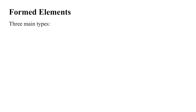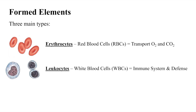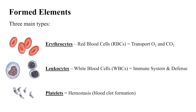There are three main types of formed elements present in blood. Most numerous are the erythrocytes, or red blood cells, which contain hemoglobin molecules that transport oxygen and carbon dioxide. Leukocytes, or white blood cells, are a part of the body's immune system and play a role in defending our body from infectious agents and other foreign materials. Platelets function in blood clot formation. Formed elements make up about 45% of whole blood, while plasma accounts for the remaining 55%.